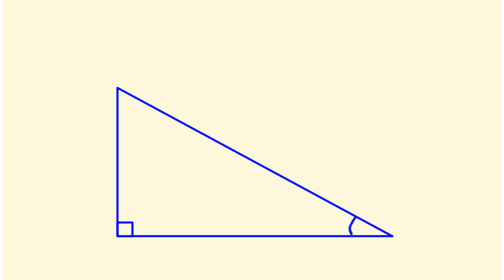We had a look at, first off, how to name the different sides of a trigonometric triangle - a right-angle triangle. When we're using trigonometry, we have a couple of different names for different sides. We had this angle here, we call it theta; we had the long side, which we call the hypotenuse; we had the side opposite theta, called the opposite; and we had the adjacent side, called adjacent. So H, O, and A.